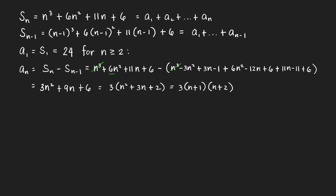Collecting the n squared terms: negative 3n squared plus 6n squared gives positive 3n squared, minus 3n squared plus 6n squared gives 3n squared. For the n terms: 3n minus 12n plus 11n equals 2n, so 14n minus 12n is 2n plus... simplifying gives 9n. The constant terms: negative 1 plus 6 minus 11 plus 6 equals 0. Factoring out 3 gives 3 times n squared plus 3n plus 2.